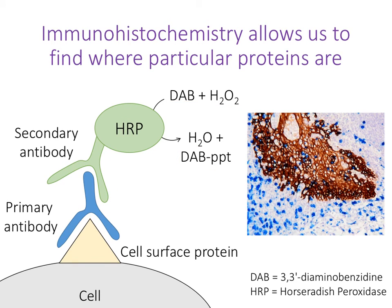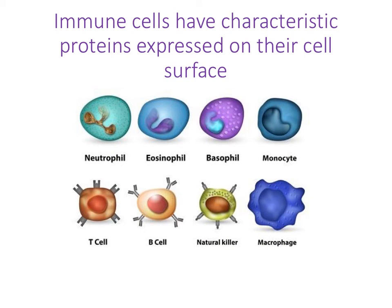This means we can identify where particular proteins are in the cell. If we look at this section here, we can see quite a lot of brown staining, which is the result of that DAB precipitate reaction. That tells us where this particular protein is located within the tissue because of the antibodies used. We can start to identify at a molecular level where particular proteins are, which is a really great technique because immune cells have characteristic proteins expressed on their cell surface.